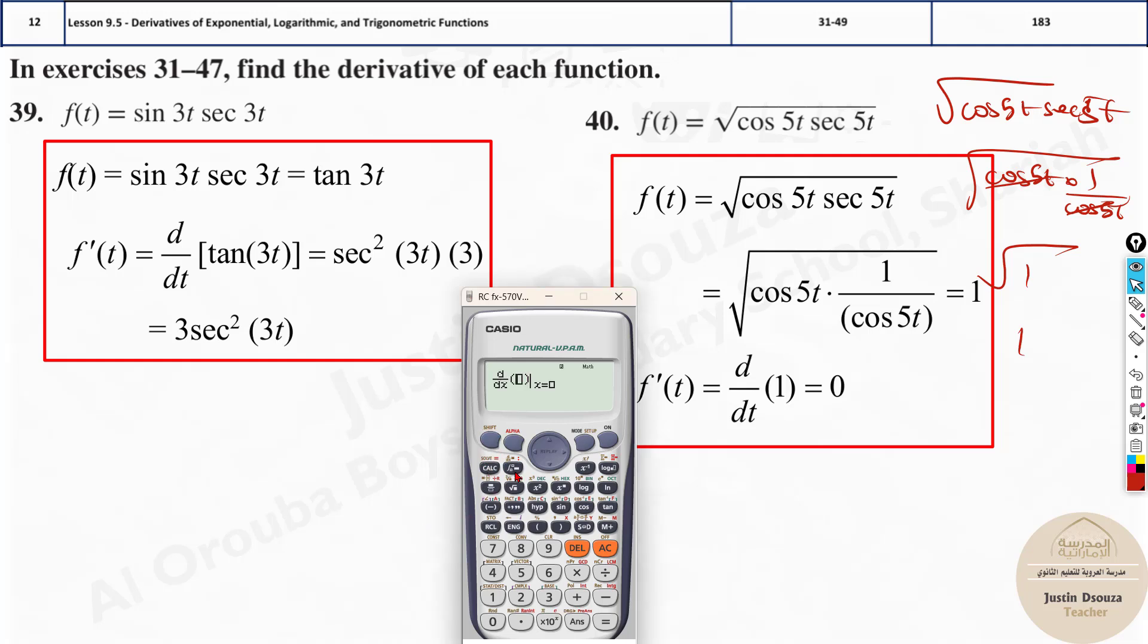So now, if you do this, derive it, shift dy by dx, the calculator method. Square root, cosine phi t, close the bracket, multiplied with 1 by cosine phi t. And now at x equals any point, what will happen? It will be 0 because it's a constant value. So that's the answer. Here it is 0, so it's a constant. Whenever you get such answer 0, just check. You will understand it's constant. The answer is directly 0.